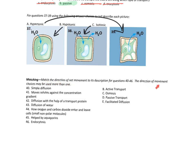Match the direction of net movement. Simple diffusion — passive transport, D. Moves solute against the concentration gradient — that's active transport, B. Diffusion with the help of a transport protein — that's facilitated diffusion, E. Diffusion of water — that's osmosis, C. There it is again: diffusion of water. How oxygen and carbon dioxide enter and leave cells — they're small and nonpolar, passive transport, D. Helped by aquaporins — that's osmosis, C. Endocytosis — that's active transport, B.